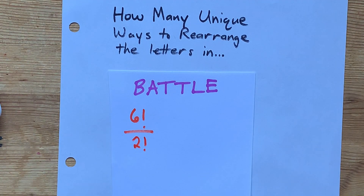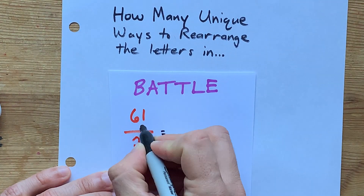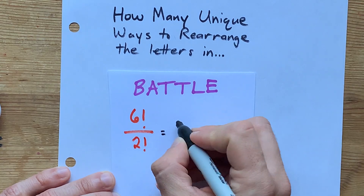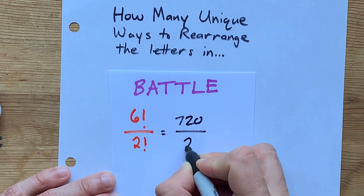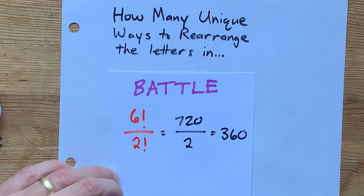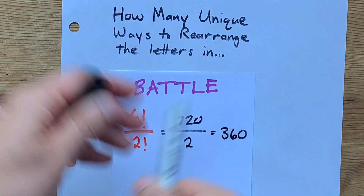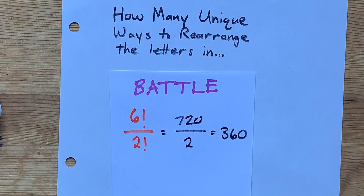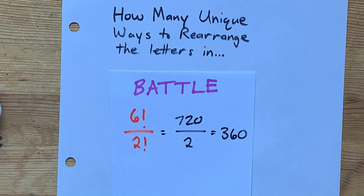We can do this either on a calculator or in our heads. Six times five times four times three times two times one is 720. Two factorial is two. That means there are 360 ways to rearrange the letters of 'battle' to spell something new. Congratulations, I hope it made sense, and best of luck.